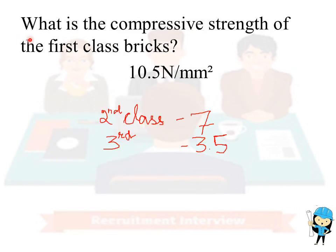The fifteenth and last question is: what is the compressive strength of first class brick? It is 10.5 Newton per mm square. Second class brick has 7 Newton per mm square, and third class brick has 3.5 Newton per mm square.